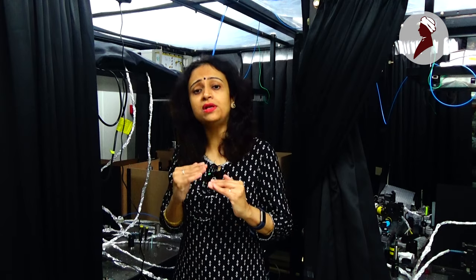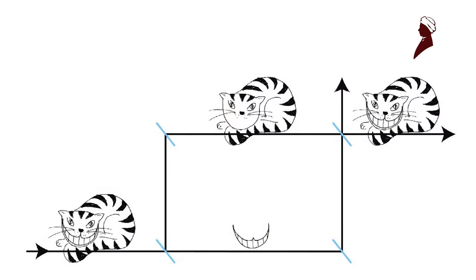Now this is something which you can actually see in a real lab by using what is called weak measurements. Now several experiments have happened but we have not been able to show the separation of the grin and the cat for the same run of the experiment.